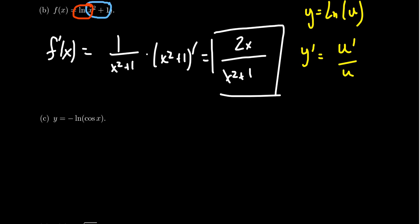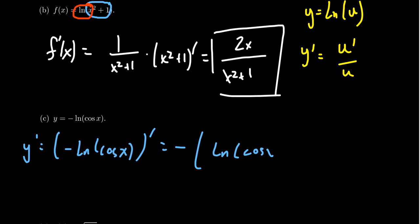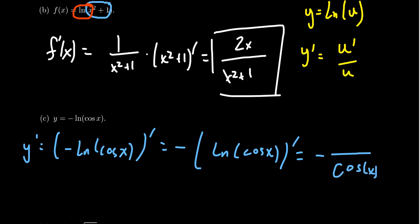Let's apply that in the next example: y equals negative the natural log of cosine of x. Computing y prime, we take out the negative sign, so we have negative times the derivative of the natural log of cosine of x. Applying the u prime over u principle, cosine goes unchanged to the denominator, and the derivative of cosine — negative sine of x — goes to the numerator. We have a double negative, making it positive, and sine over cosine can be written as tangent. So we actually found a function whose derivative is tangent.